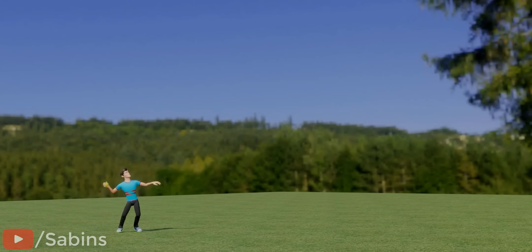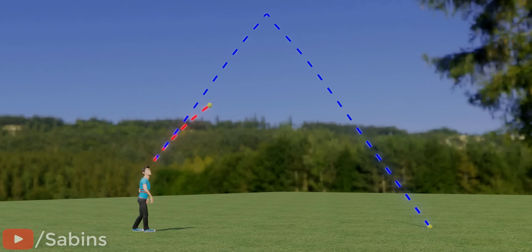When you throw a ball at an angle, it never goes straight like this. Instead, it will have an elegant curved path, more specifically, a parabolic path.